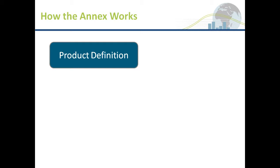The first stage is the product definition. It sounds odd that we have to create a product definition for something like a refrigerator or a washing machine — it's obvious what they are. However, the terminology and definitions used around the world vary quite significantly, to the point where terminology in one place can actually mean something completely different elsewhere. So the product definition creates a common framework that all countries can use.